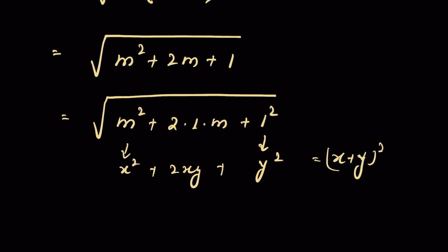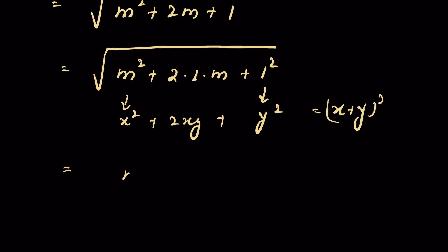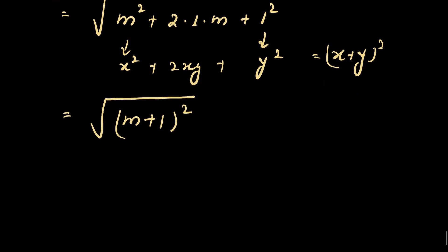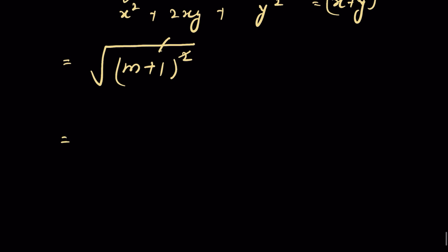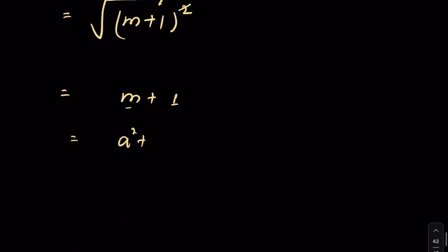So this is equal to (x plus y) whole squared — an algebraic identity — and we can write it as (m plus 1) whole square under square root. We can remove the square root with this square, so it equals m plus 1. Remember m equals a squared plus 3a, so the answer is a squared plus 3a plus 1.